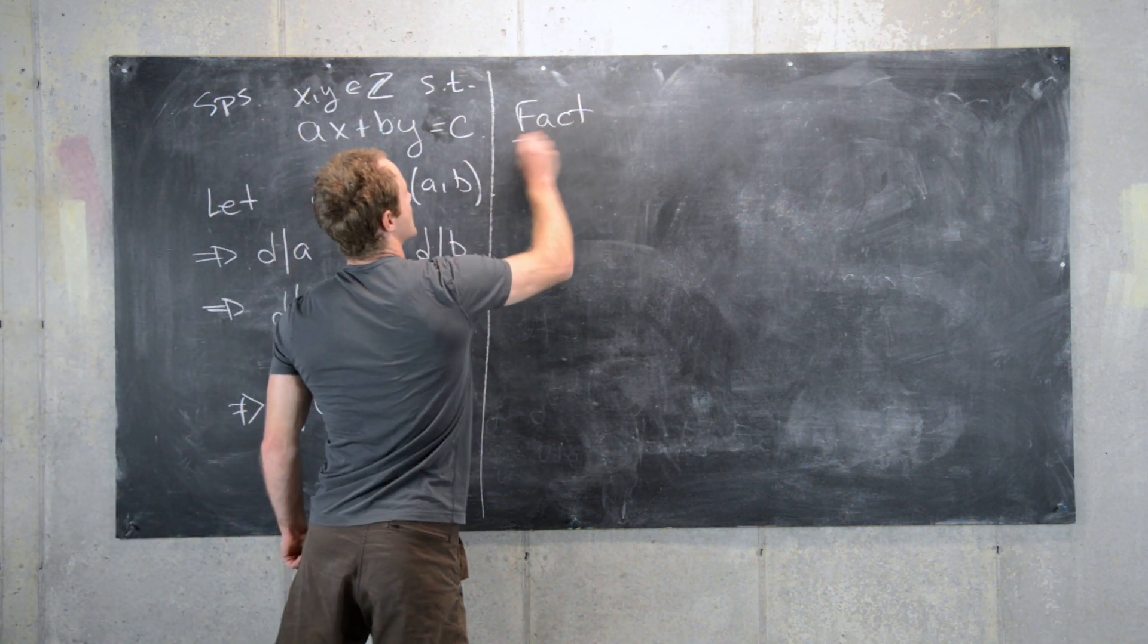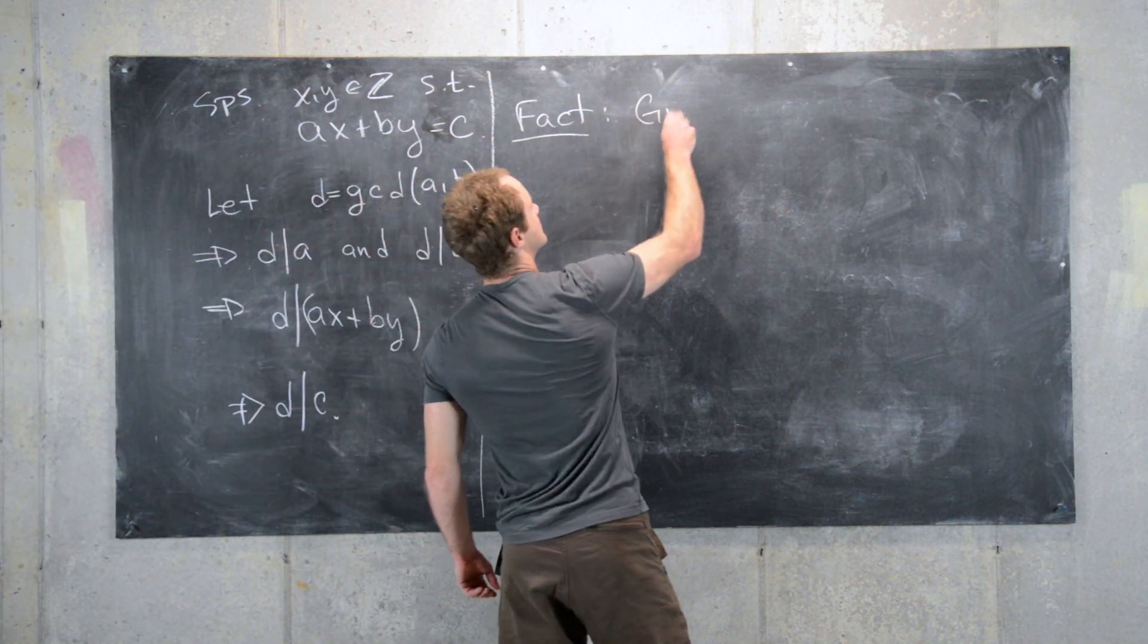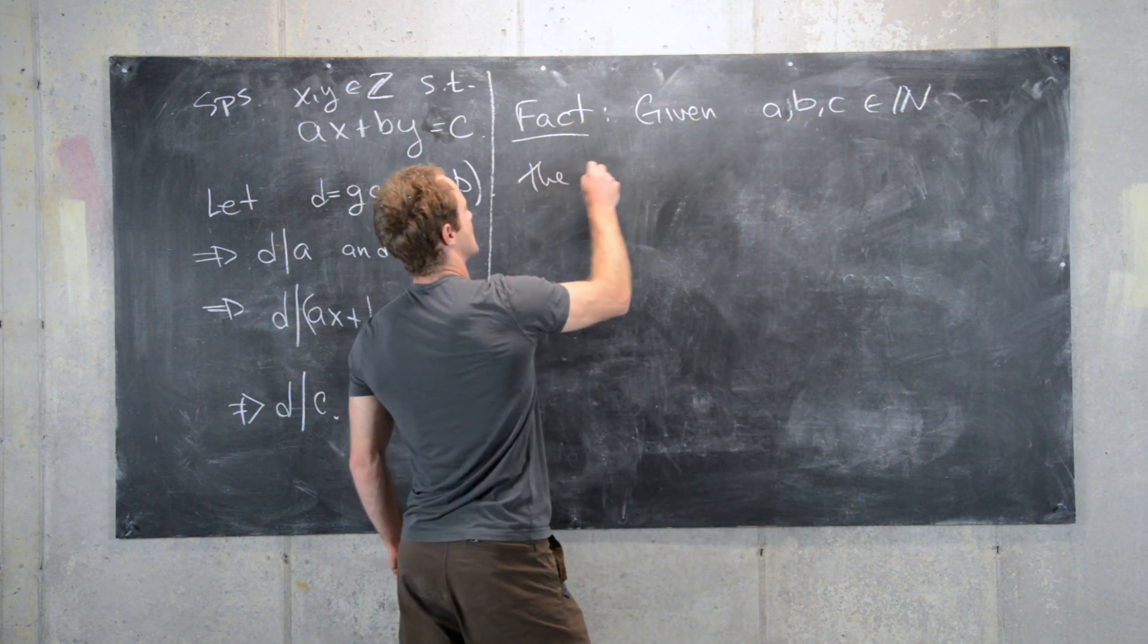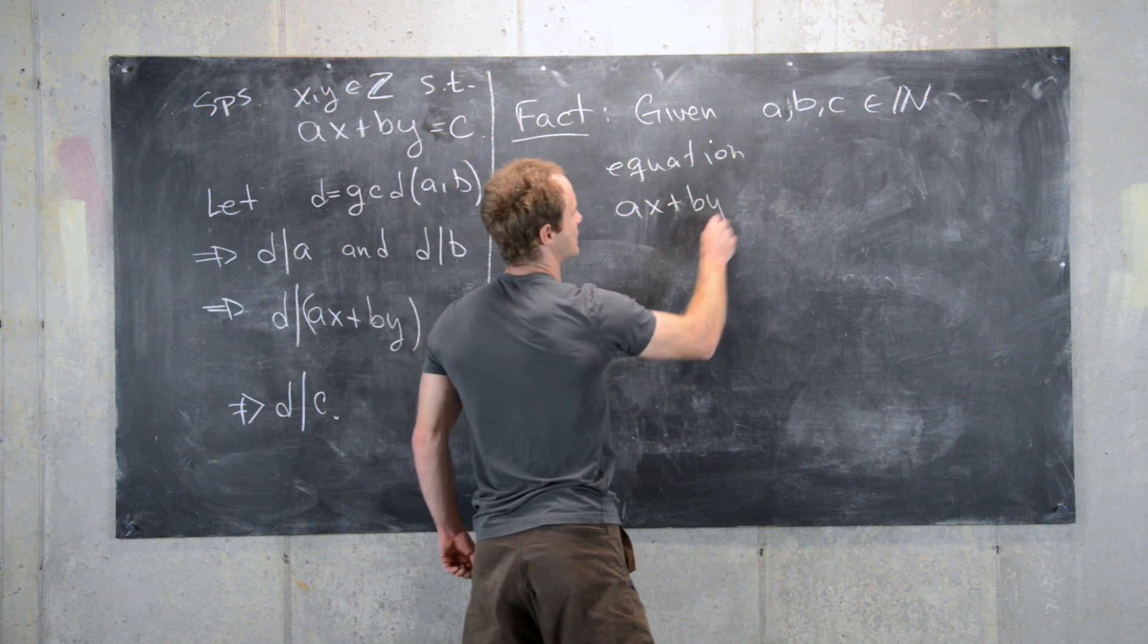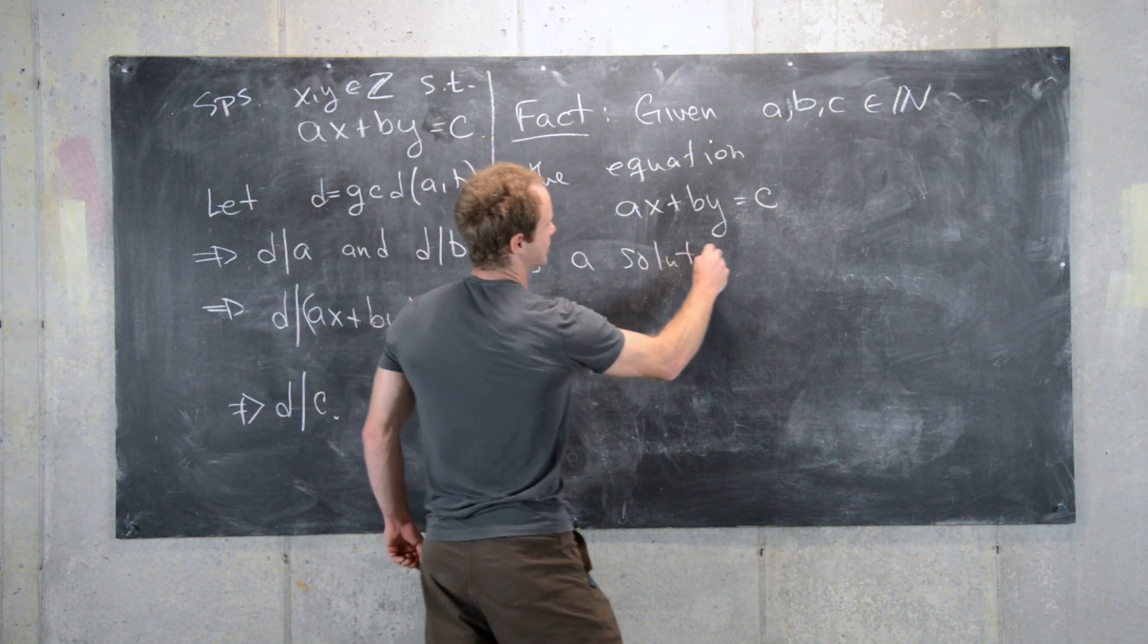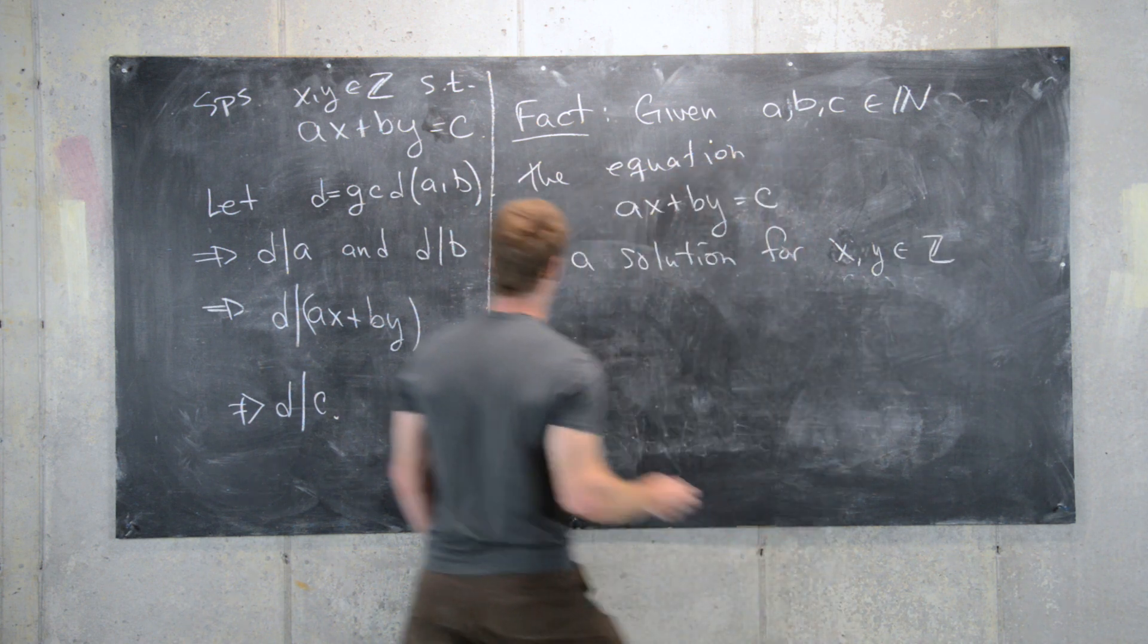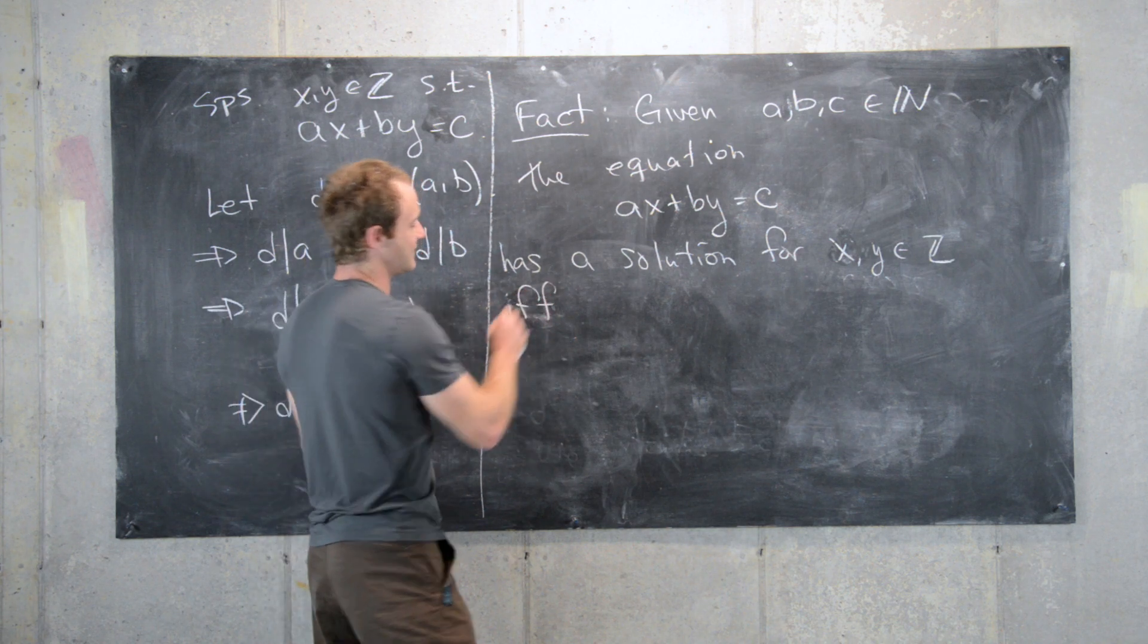So that leads us to the following fact: given a, b, and c natural numbers, the equation ax plus by equals c has a solution for x and y integers if, and I'm going to put if and only if here,